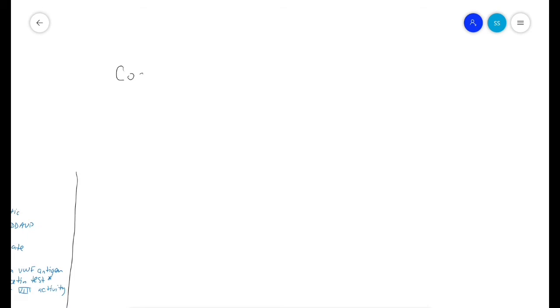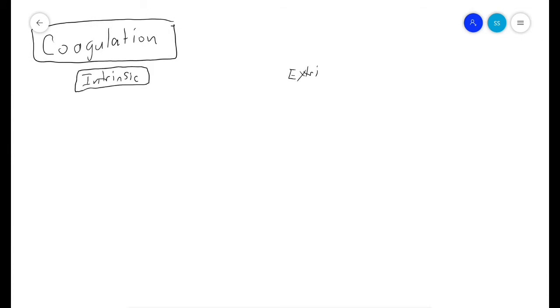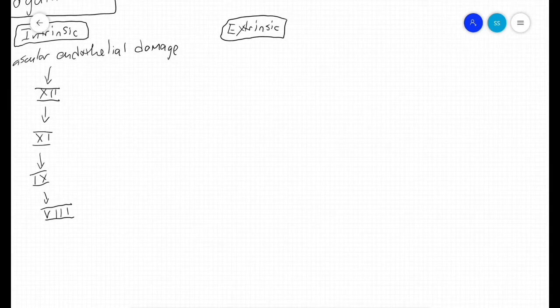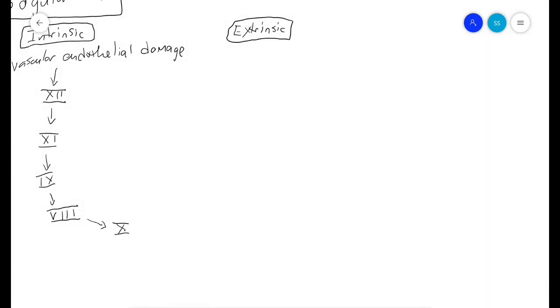Moving on to the actual coagulation cascade. The cascade has two branches: intrinsic and extrinsic. The intrinsic branch starts when vascular endothelial damage occurs, then there's a cascade of factors with Roman numerals. It starts with 12, then goes to 11, then 9, then 8, and then comes back to 10, which is the common pathway.